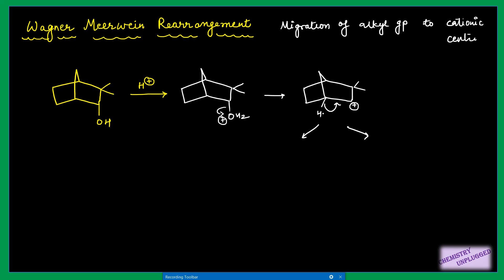We will see the result of both migrations. In the first possibility, this proton — this bond — will shift and we will get a double bond. But we know this double bond will not be stable because it is on a bridgehead carbon. So this product is not possible; it will not be stable.